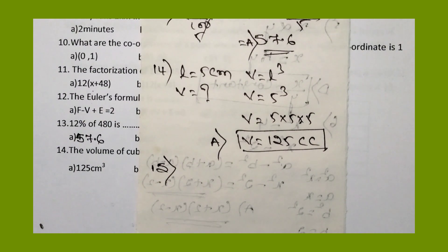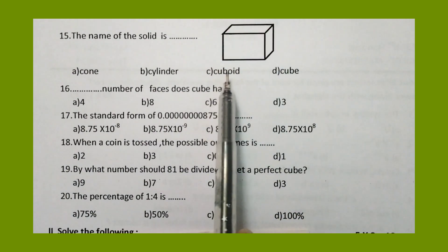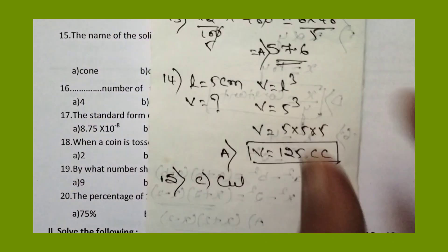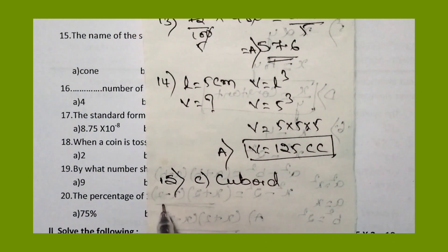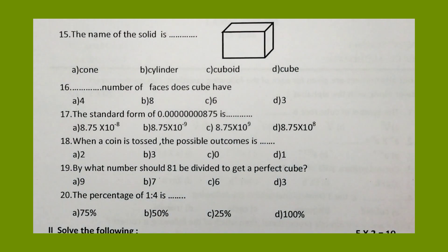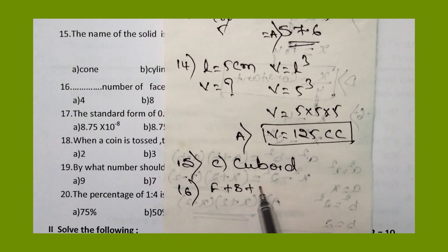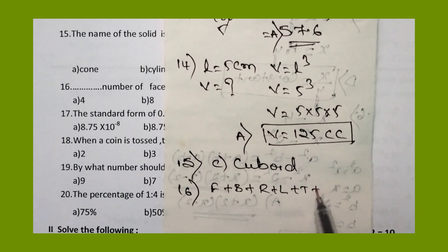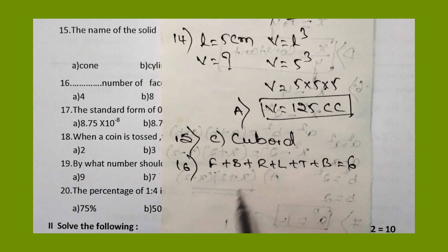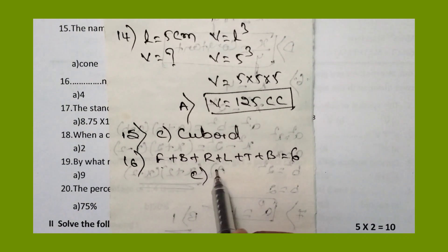The fifteenth question: the name of the solid. This solid is a cuboid. Option C, cuboid, is the right answer. Moving to the sixteenth question: a cube has how many faces? Counting: front, back, right side, left side, top, and bottom — that is totally six faces. Option C, six, is the right answer.